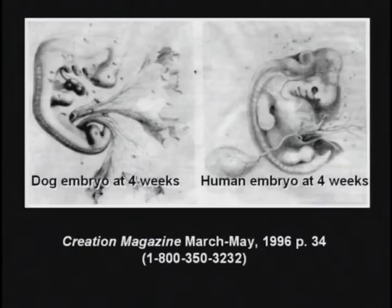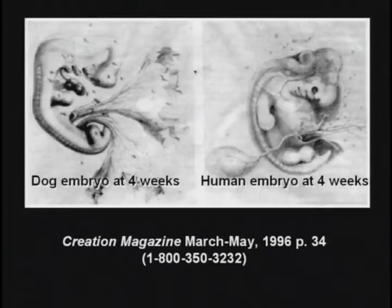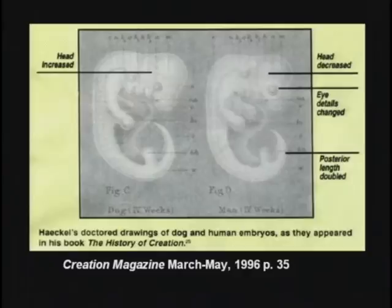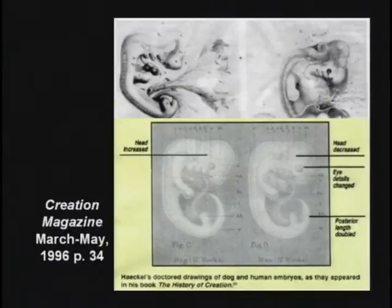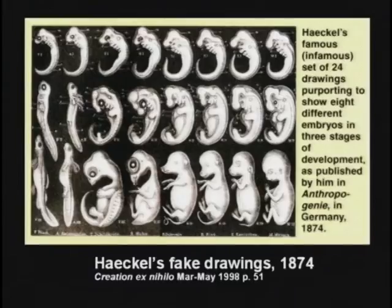Haeckel took a drawing of a dog and a human embryo — he was an embryology professor. And he lied. He faked the drawings, changed them and made them look exactly alike to prove they're related. It's a bald-faced lie. Haeckel made giant posters of his fake drawings and traveled all over Germany and converted the people to believing in evolution.